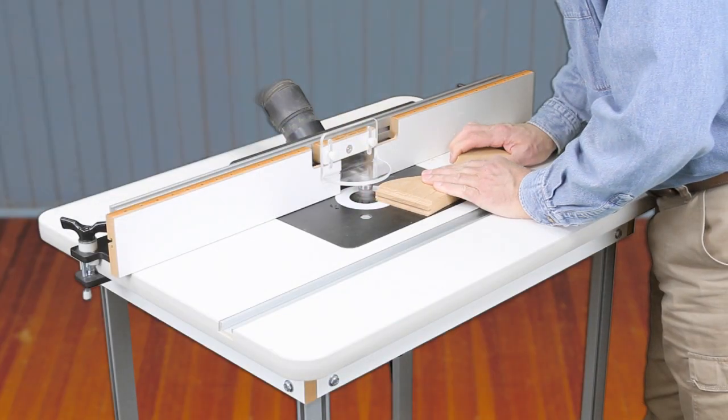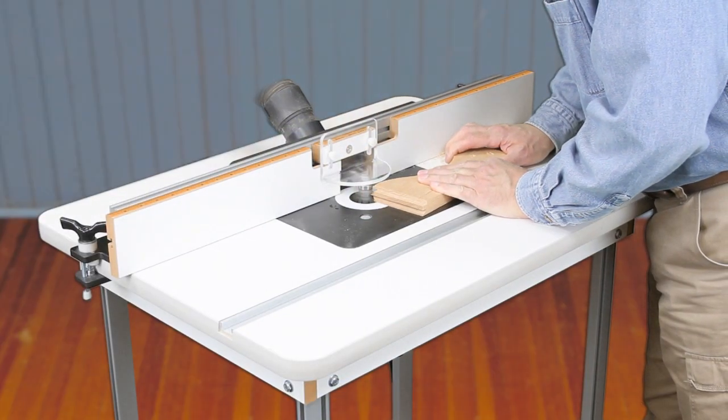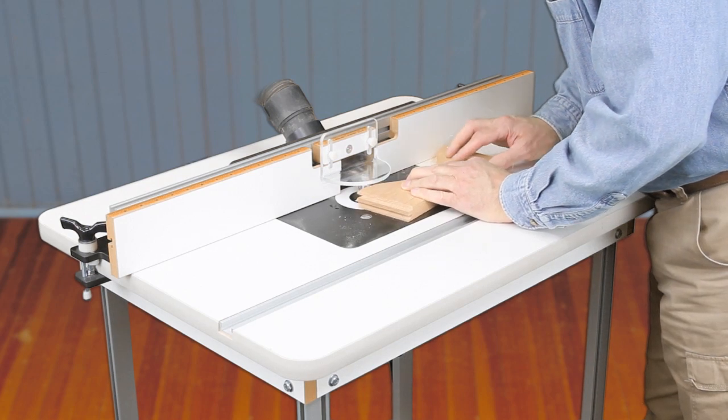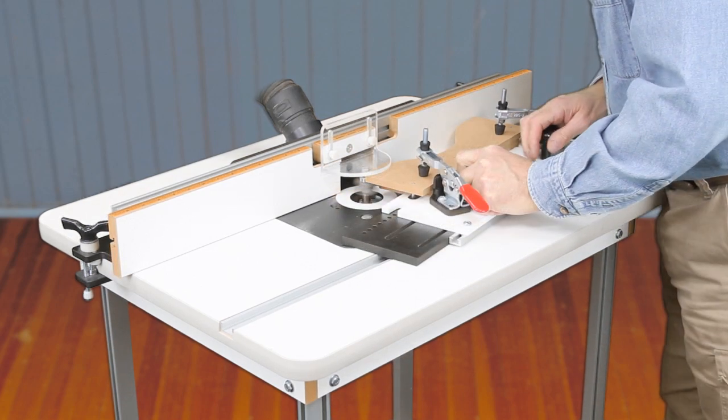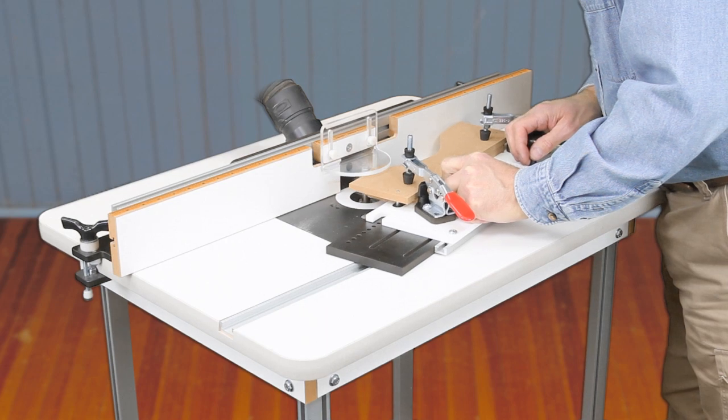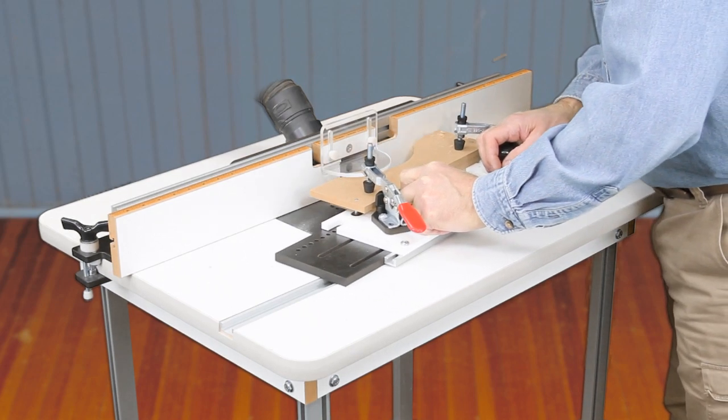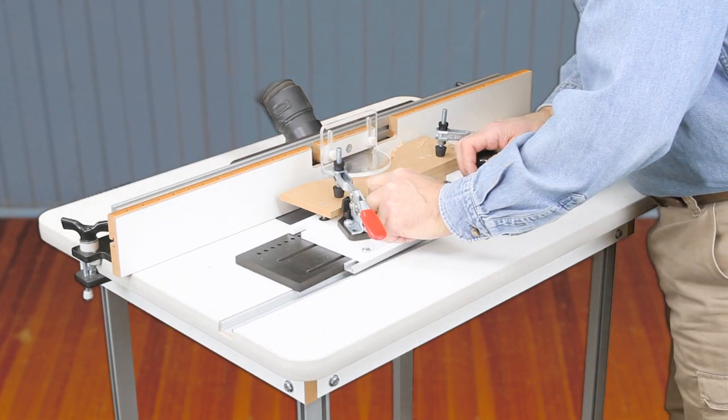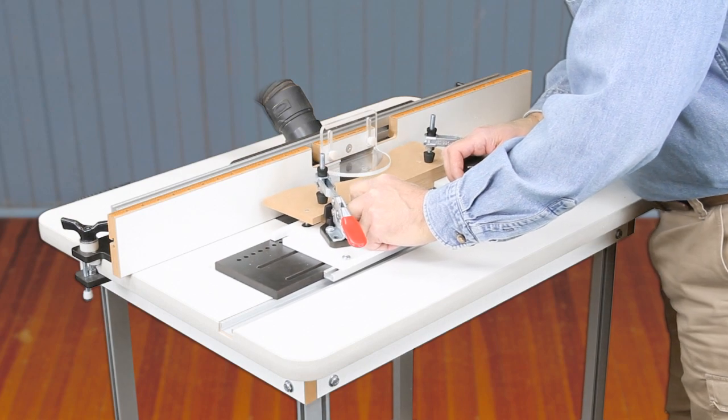After making the pattern cut in all the straight stock, make the pattern cut in the cathedral rail with the same bit setup. You can also use the Frame and Panel Master to safely hold the cathedral rail and make the pattern cut, but make sure the bearing rides firmly on the template.